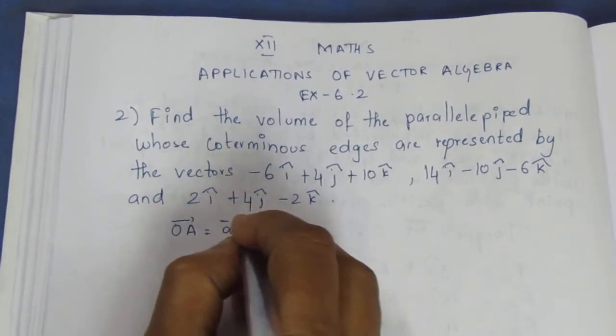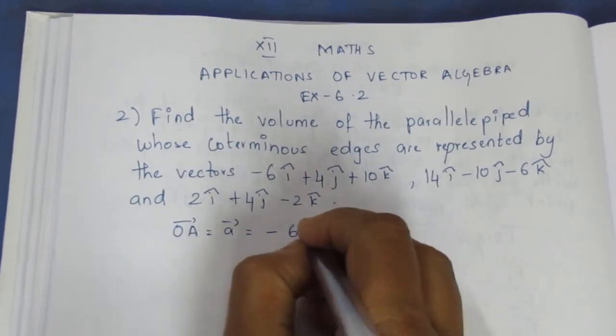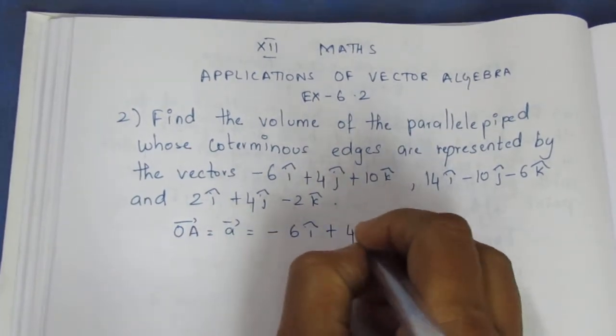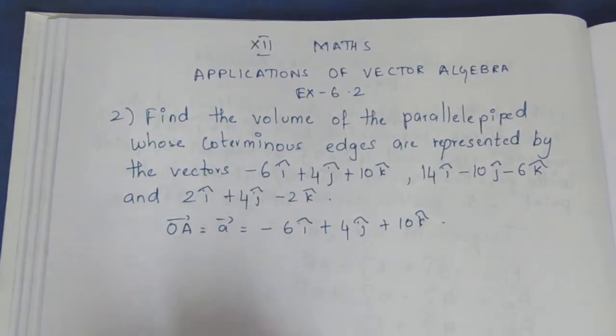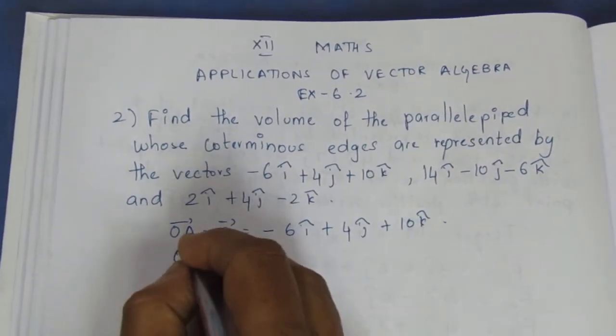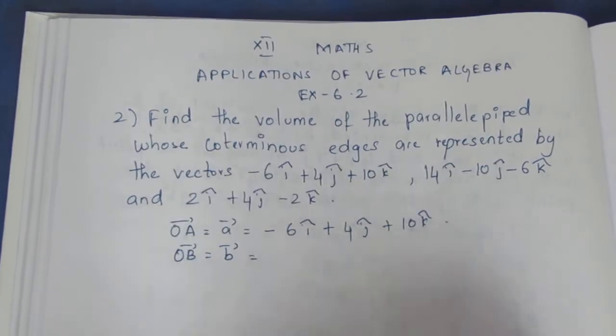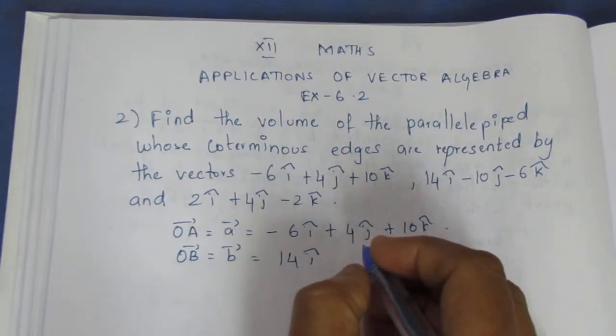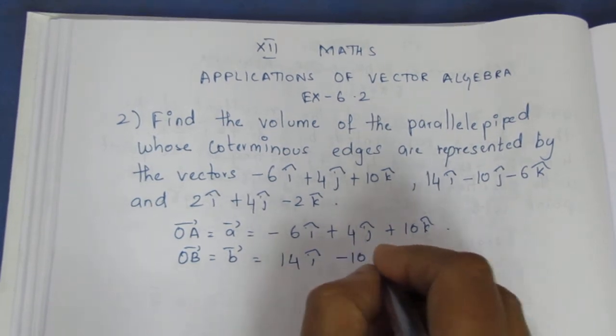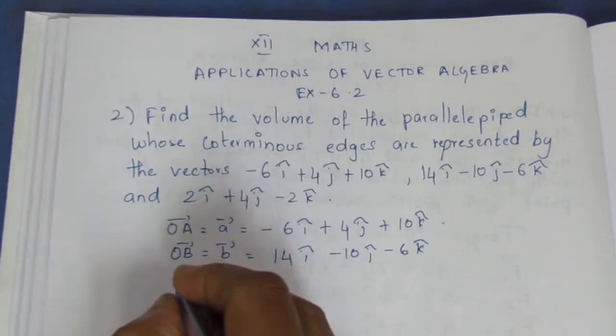OA vector, that is A vector, is equal to minus 6i cap plus 4j cap plus 10k cap. OB vector, OB vector, equal to 14i cap minus 10j cap minus 6k cap. This is very easy, this is a formula.